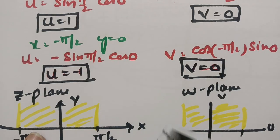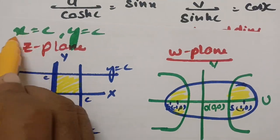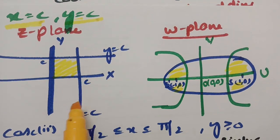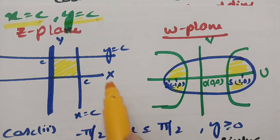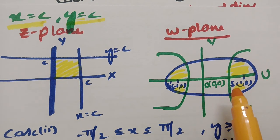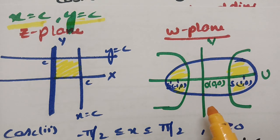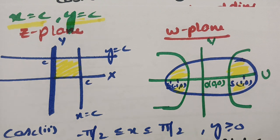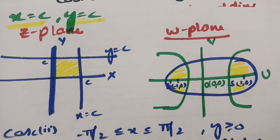To summarize: for x = c in the z-plane we get a hyperbola in the w-plane; for y = c we get an ellipse; and both share the same foci. Thank you so much for watching. If you liked the video, give it a thumbs up, subscribe to the channel, and I'll see you in the next video. Stay connected and have a good time.